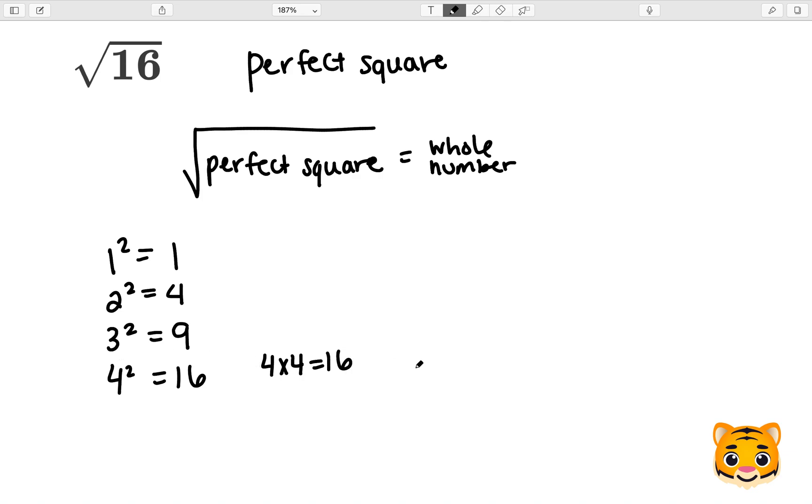Because 4 squared equals 16, the square root of 16 will be 4. To solve the square root of 16, we can use the fact that it is a perfect square and identify that 4 times 4 equals 16 to get an answer of 4.